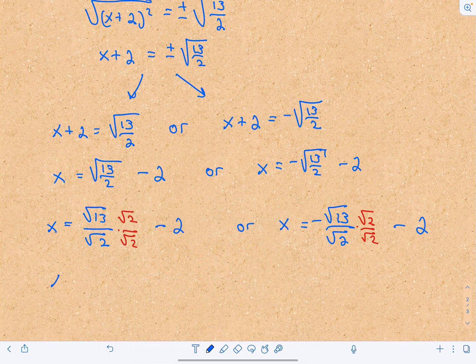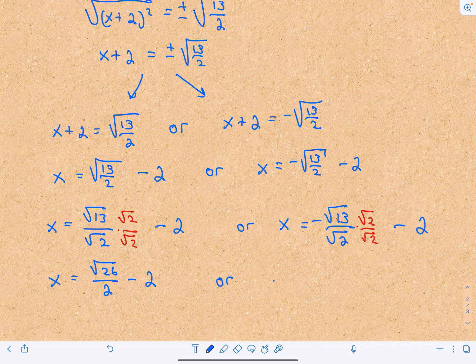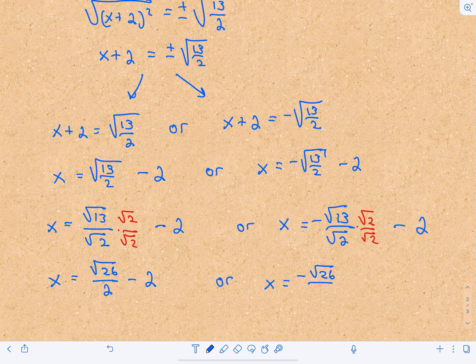This will leave us with our solution: √26/2 - 2, or my other solution will be x = -√26/2 - 2.